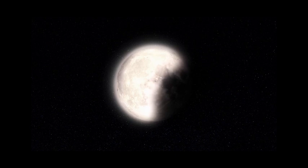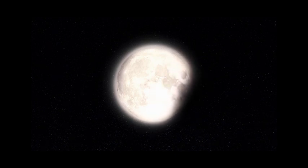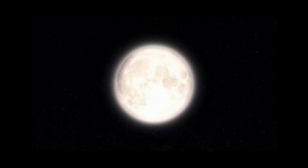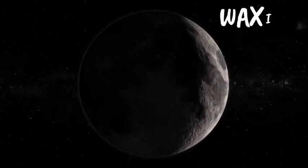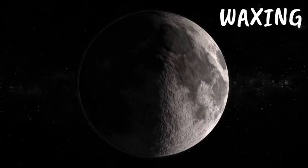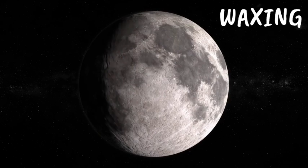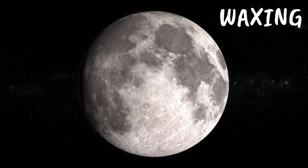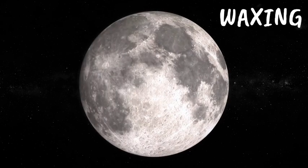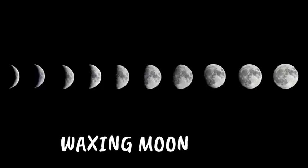But first, let's learn some new vocabulary words that will help you understand the moon phases better. Number 1: Waxing. Waxing means increasing. Waxing refers to the process of the moon's lit-up portion increasing in size. When the moon is waxing, it's growing from a crescent to a full moon and it appears to be getting bigger in the night sky.